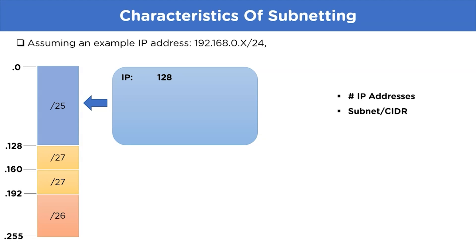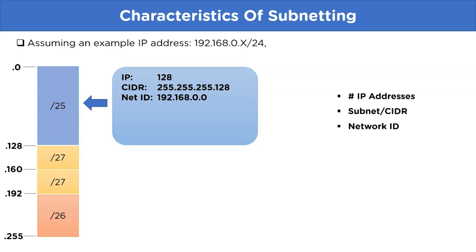Moving on, we will find the subnet mask or CIDR. The default subnet mask of Class C, referenced from the subnet table, is 255.255.255.128. Then we have the network ID, which represents the topmost network address in the subnetwork block — in our case it is 192.168.0.0. Then we have the broadcast ID, which is the last IP address in the subnetwork block — in our case it is 192.168.0.127.